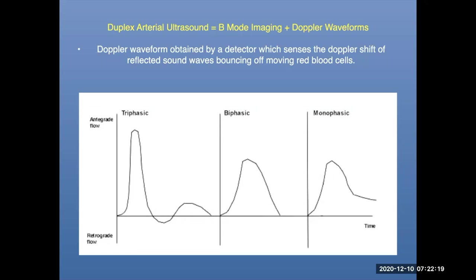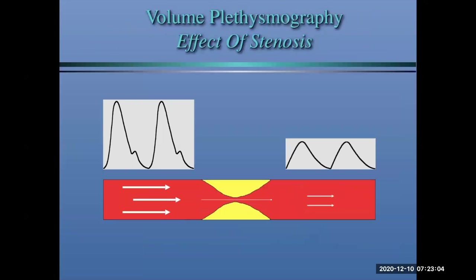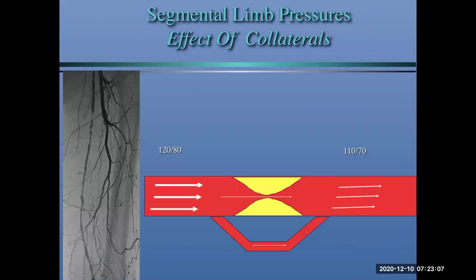This is very different from PVRs. With duplex you're looking at triphasic, biphasic, and monophasic waveforms. As you lose the peak below the baseline, you can see the transition. It can be difficult to tell sometimes, so many will dictate 'monophasic to biphasic' or 'biphasic to triphasic' when in that in-between phase, just to indicate some abnormality without forcing it into a box. Top right shows pulse volume recordings — very different things, obtained differently and giving different information.